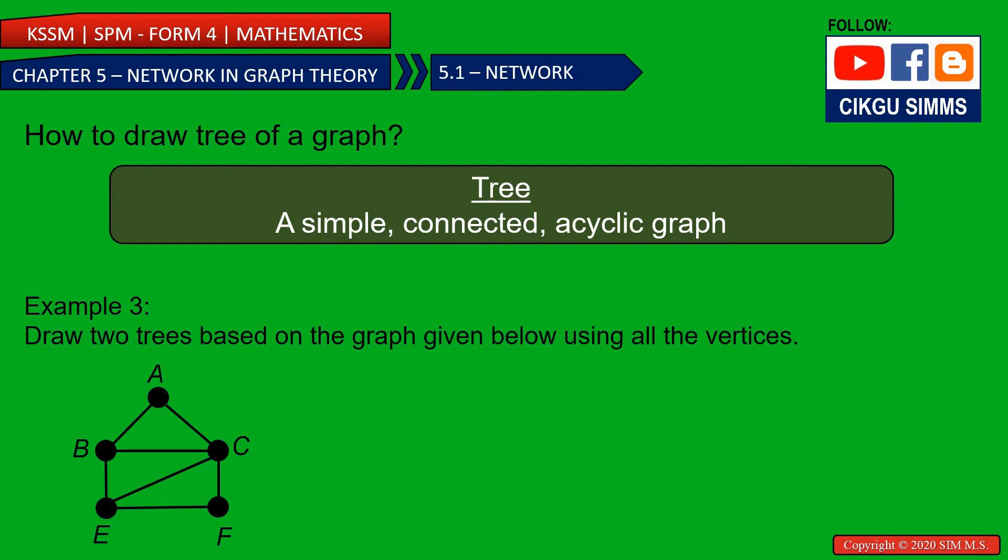Example 3, draw 2 trees based on the graph given below using all the vertices. So you need to draw 2 trees. Let's draw the first tree. I draw the vertices out first. We have 5 vertices. So connected by 4 lines. And then you need to connect all of them, only 4 lines. So I can draw the first one: 1, 2, 3, 4. This is the first tree.